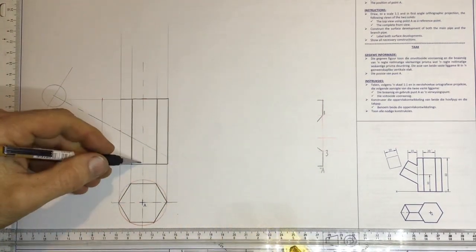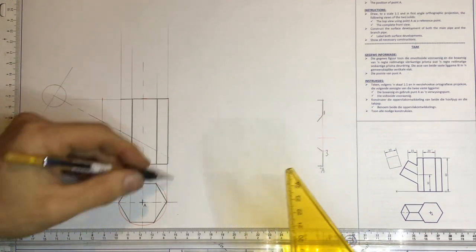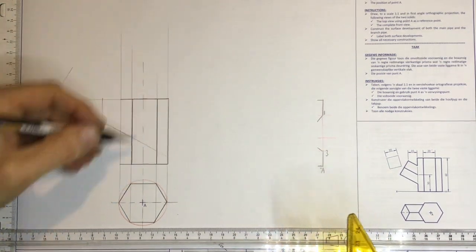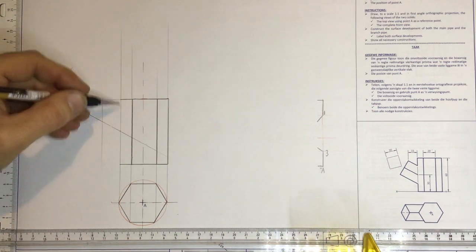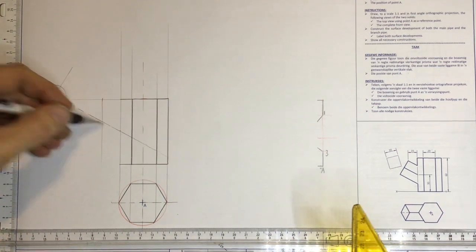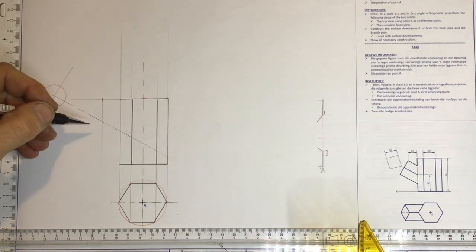Once you've done that, you measure off about 20 millimeters over there. Draw in your base. You can draw that side in, that side in, that side in. You'll note that I didn't draw that side in. The reason being is that I've got that branch pipe intersecting in over there.